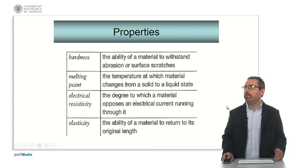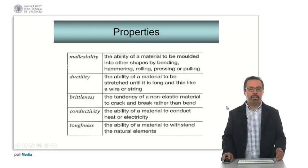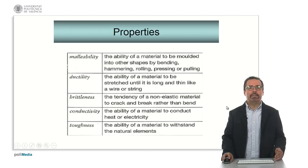We can also refer to more engineering properties of materials. Here we have typical engineering properties. Hardness, the ability of the material to stand or resist abrasion or surface scratches. Melting point, the temperature at which the material changes from solid to liquid. Electrical or thermal resistivity. Elasticity. Malleability and ductility are very closely related properties of materials. Brittleness, the capacity to break easily. Conductivity, to conduct heat or electricity. Thermal conductivity or electrical conductivity. Or, toughness, which is the ability of a material to withstand natural elements. You have to check to understand these engineering properties properly.